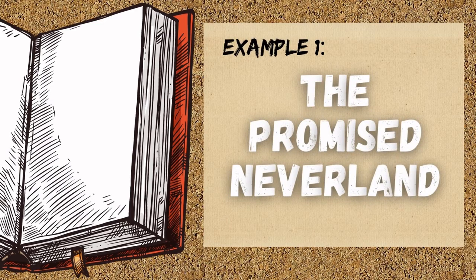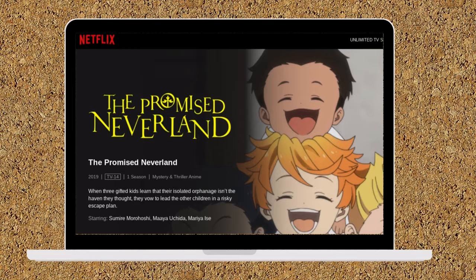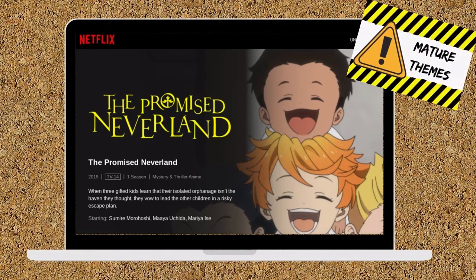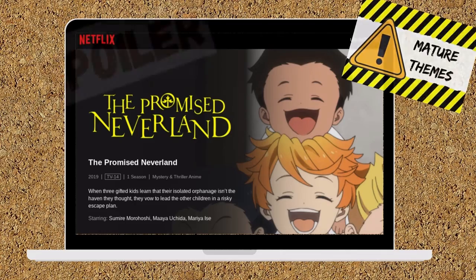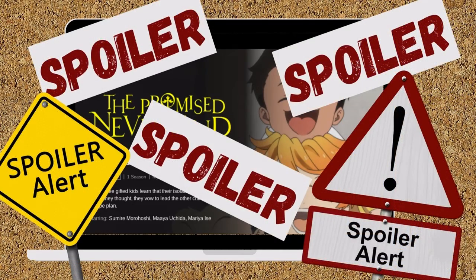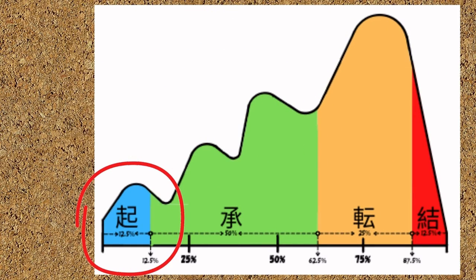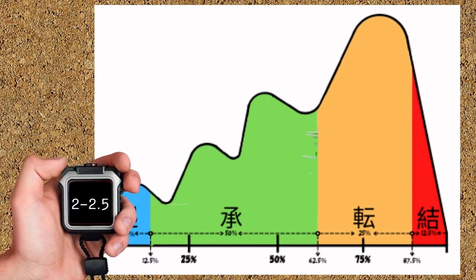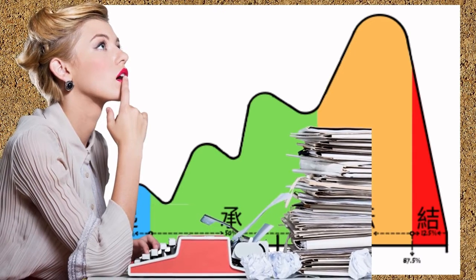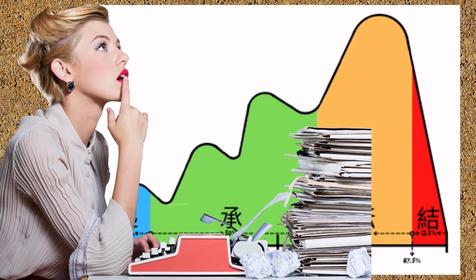My first example is from a show you can find on Netflix called The Promised Neverland. I'll take my example from episode 1 of the series. Fair warning — this show deals with some disturbing themes, and spoilers abound. The story follows a group of children at the Gracefield Orphanage. We open with a scene of three children standing in front of an ominous iron gate staring down a long, dimly lit corridor. The first act is about 12-13% of the show — in a 22-minute anime, that's only about two and a half minutes. In the hands of a master storyteller, it's more than enough.